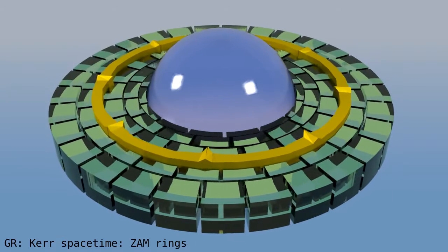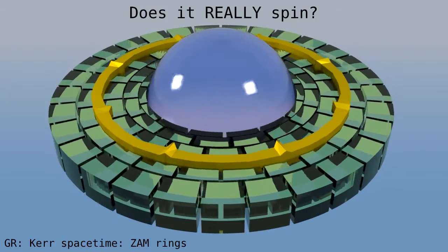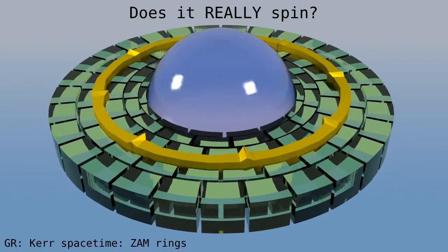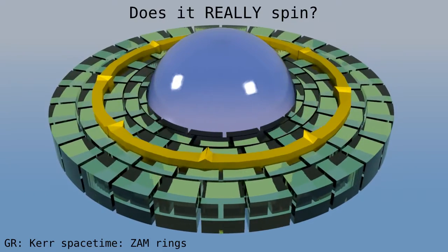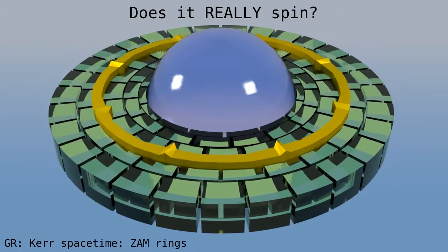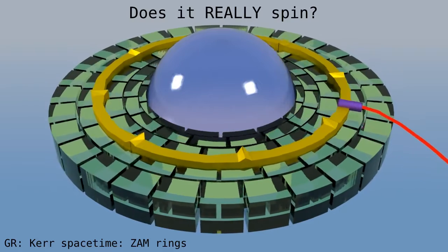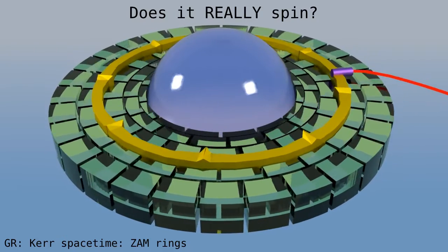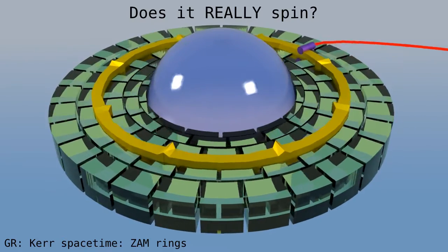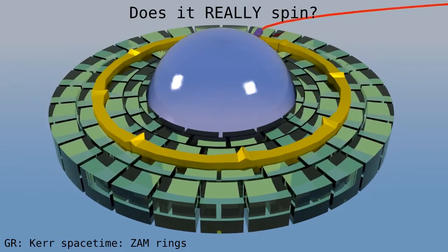Now, you may wonder if spacetime really spins, or if it just looks that way, because of some bad choice of coordinates. Well, there are some real physical effects. For example, we can put a laser pointer on the ring and let it shine outward. We can then detect the laser beam far away and see that it sweeps around in a cycle.